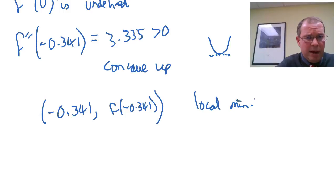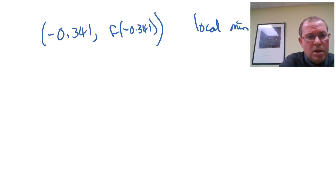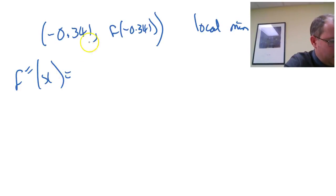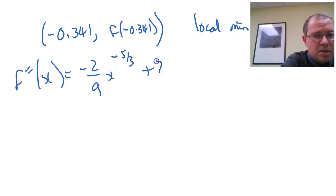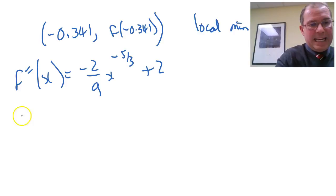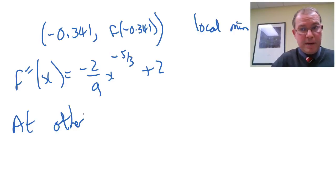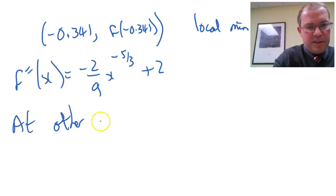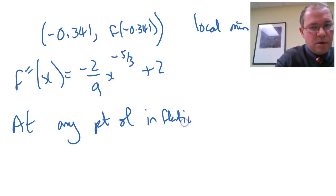Moving on. We now want to look at the second derivative, which is minus two ninths x to the minus five thirds plus two, because we know we might have some other points of inflection that are not horizontal. We've got a local minimum, no horizontal points of inflection, no local max. At any point of inflection, one of two things happens.